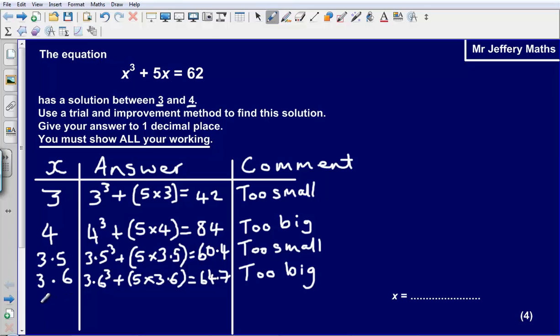So the way in which I am going to decide is I am going to choose the number that is halfway in between those two. So the number that is halfway between 3.5 and 3.6 is going to be 3.55. So now let's substitute that in to the equation at the top. 3.55³ + (5 × 3.55). And let's see what that comes out as.